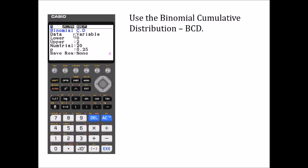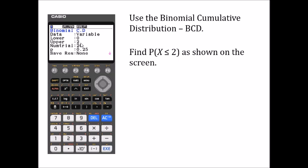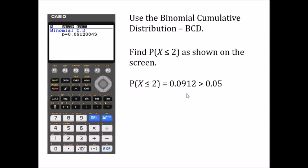Head to that function and you should come up with this screen. We need to find the probability that x is less than or equal to 2. So lower value is 0, upper value is 2, number of trials and p unchanged. Press execute and you should find it comes out to be about 0.0913.